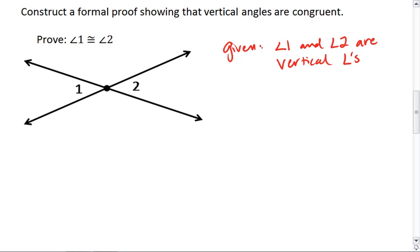Whenever you have a diagram, you can always add in notation as long as you don't change what you're given. For example, we have angle 1 and angle 2 marked. We can also label this angle 3.